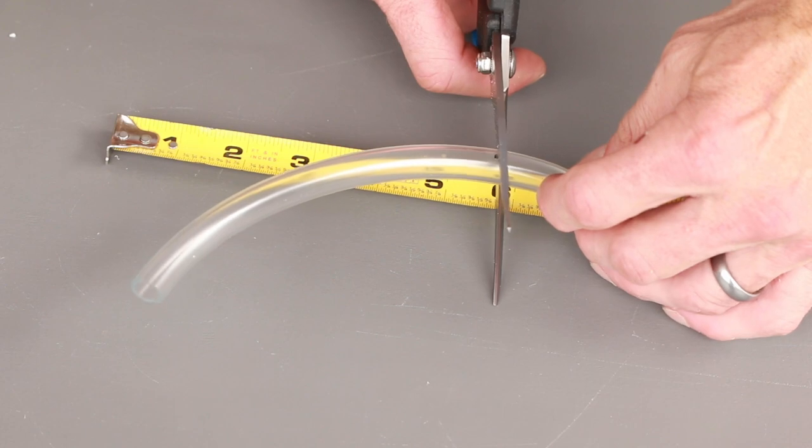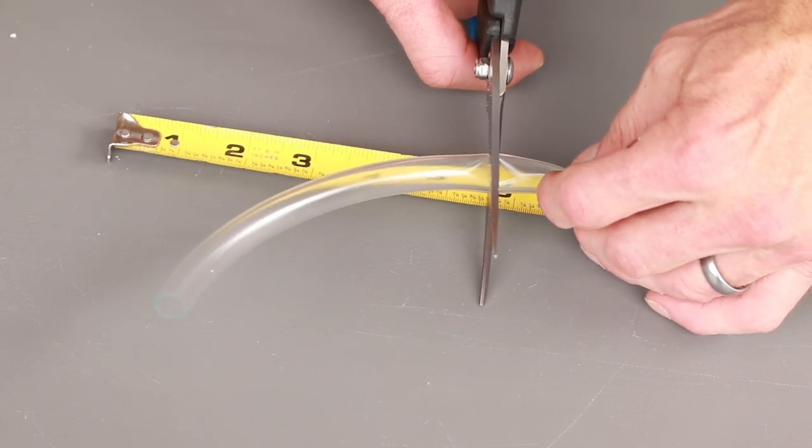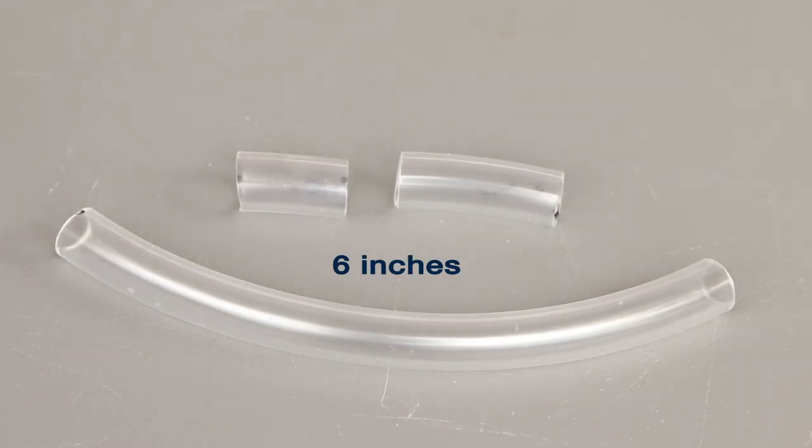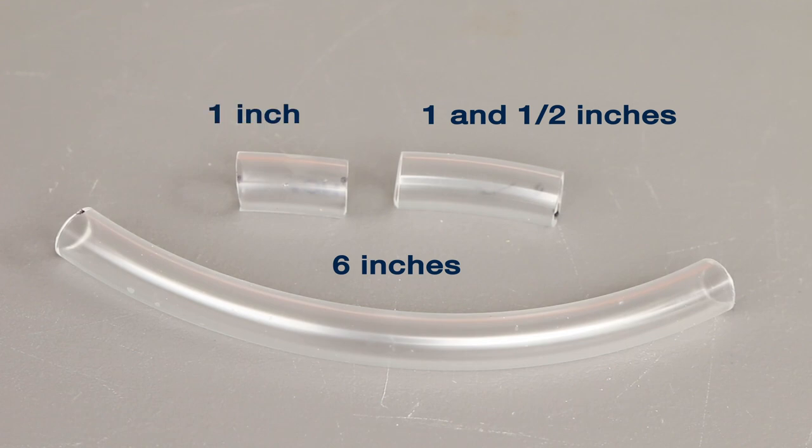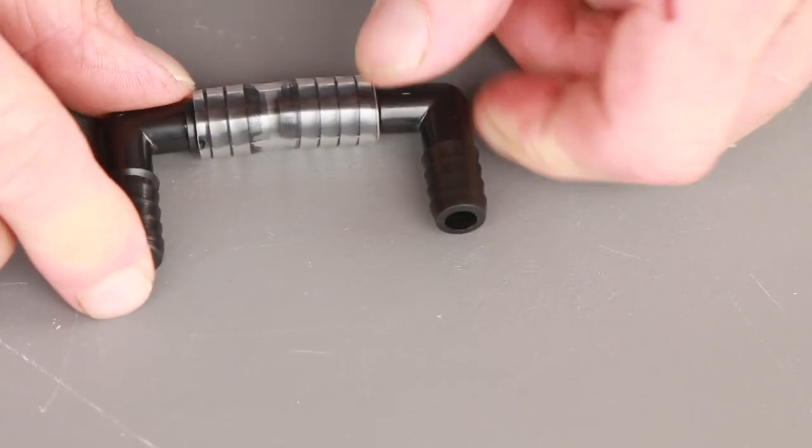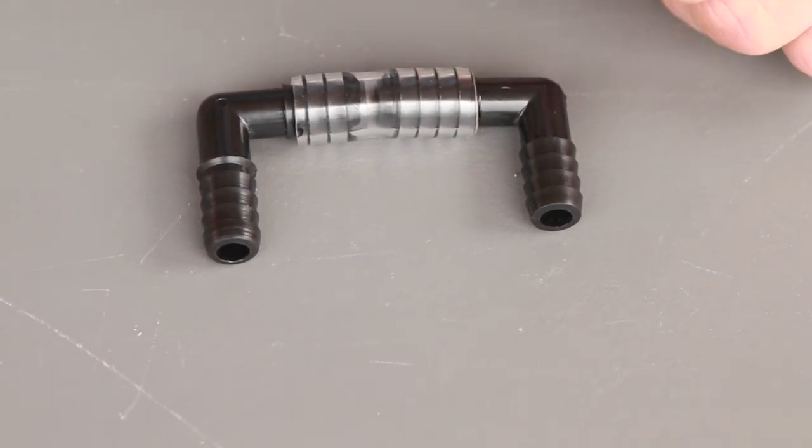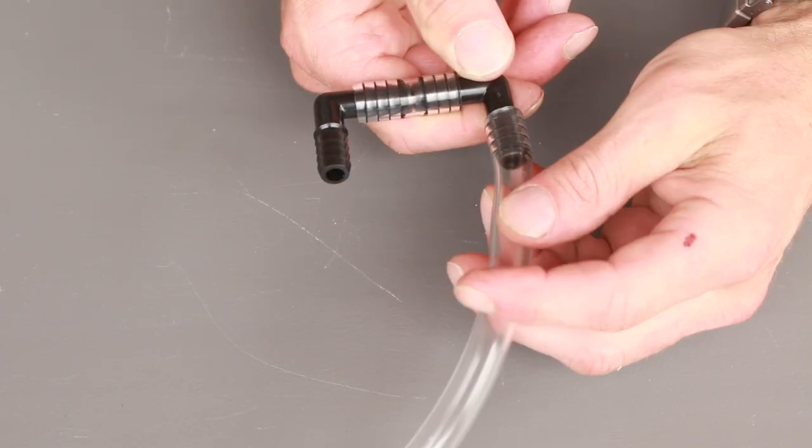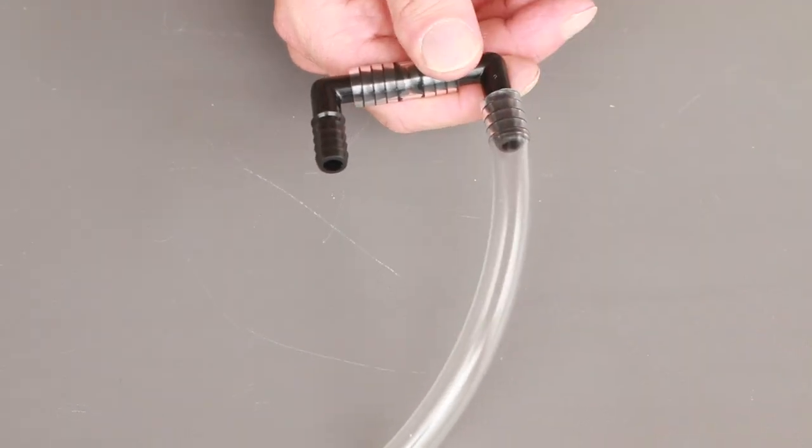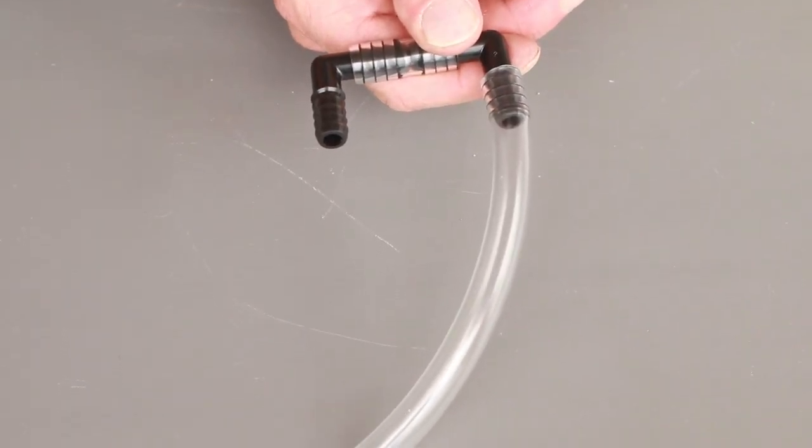Cut three pieces of the 3/8 inch hose: one 6-inch piece, another 1 and 1/2 inches long, and the last 1 inch. On each end of the 1 and 1/2 inch hose, push one of the 90-degree barbed fittings. On the other end of one of the barbed fittings, add the 6-inch hose piece.